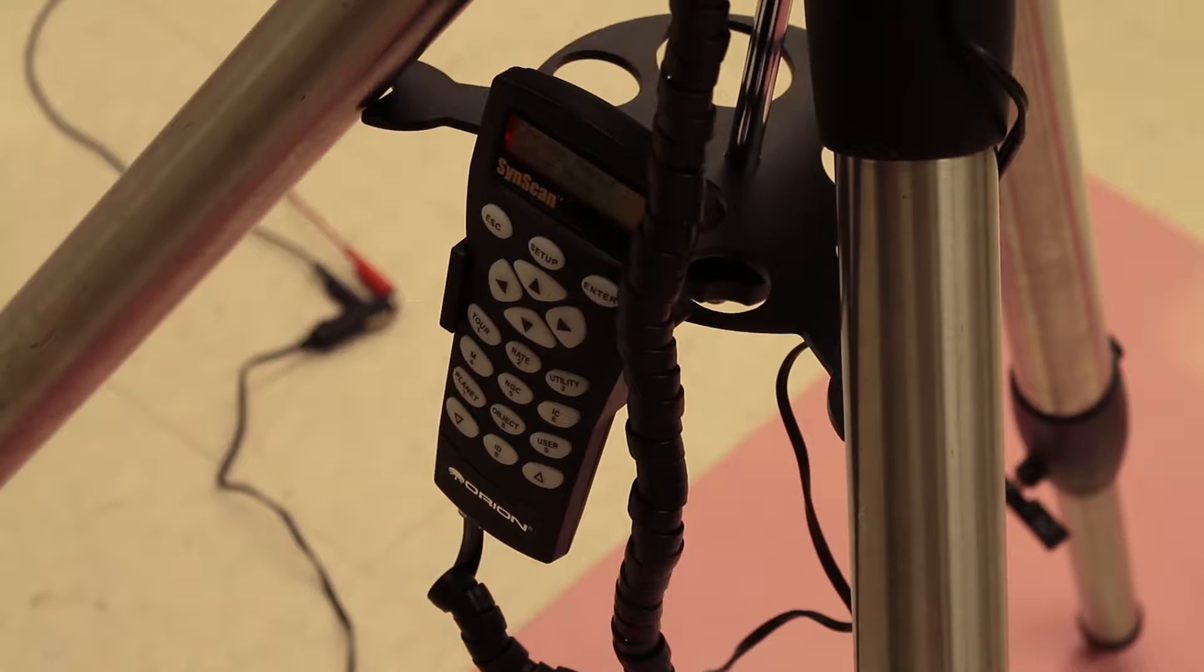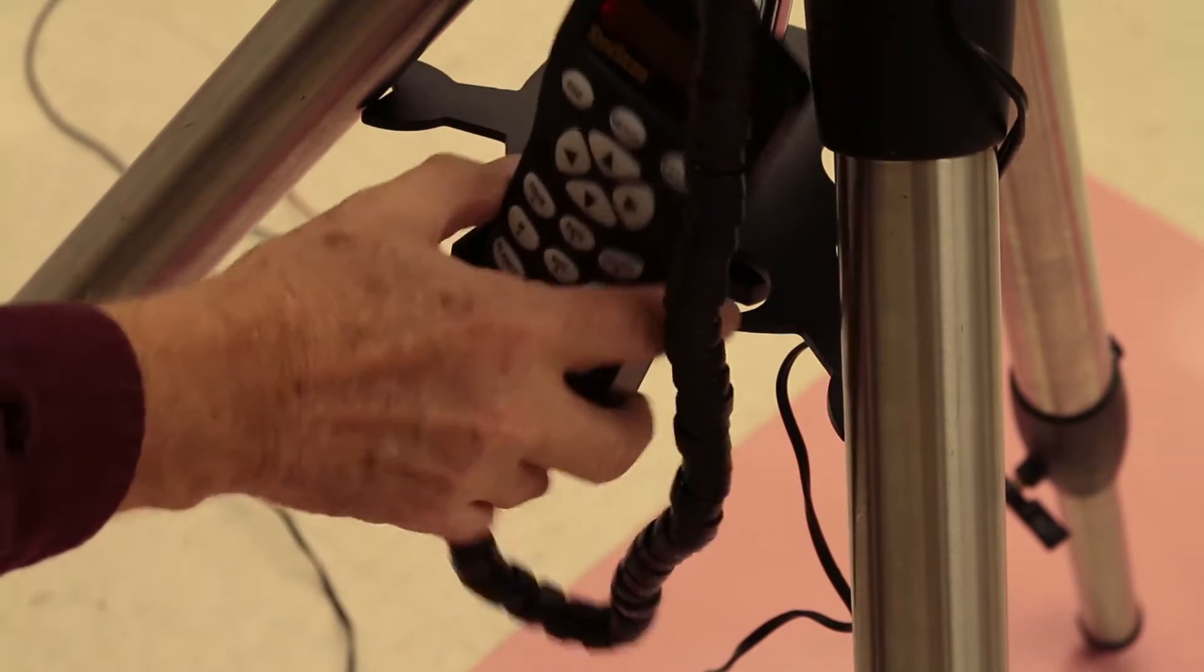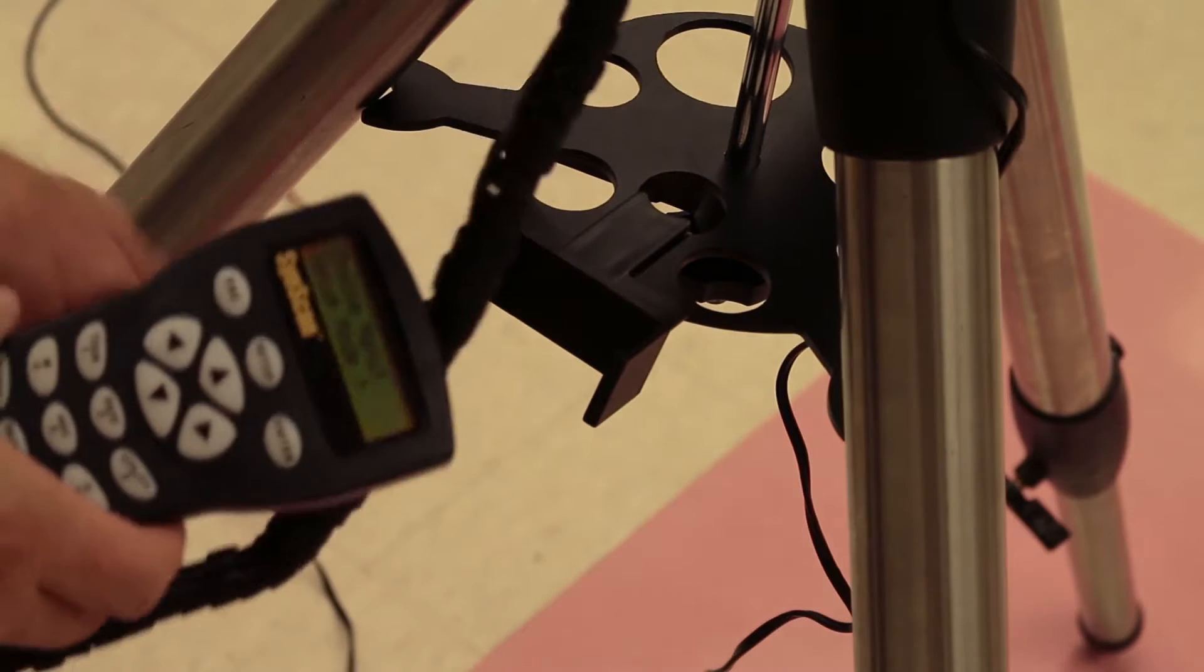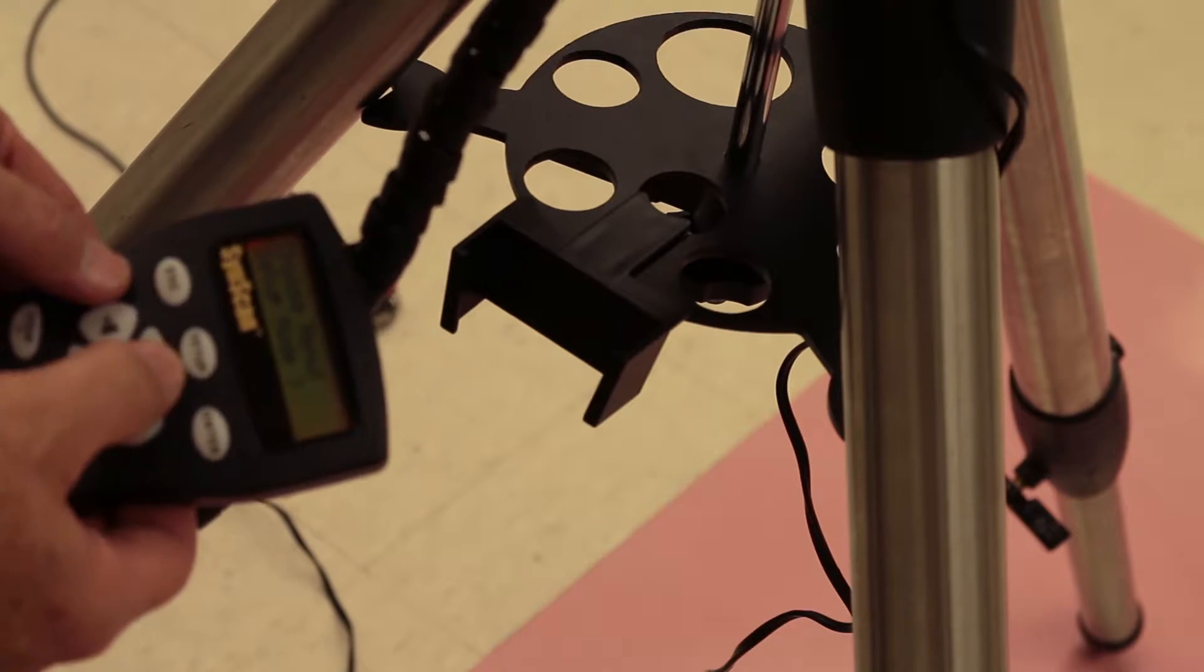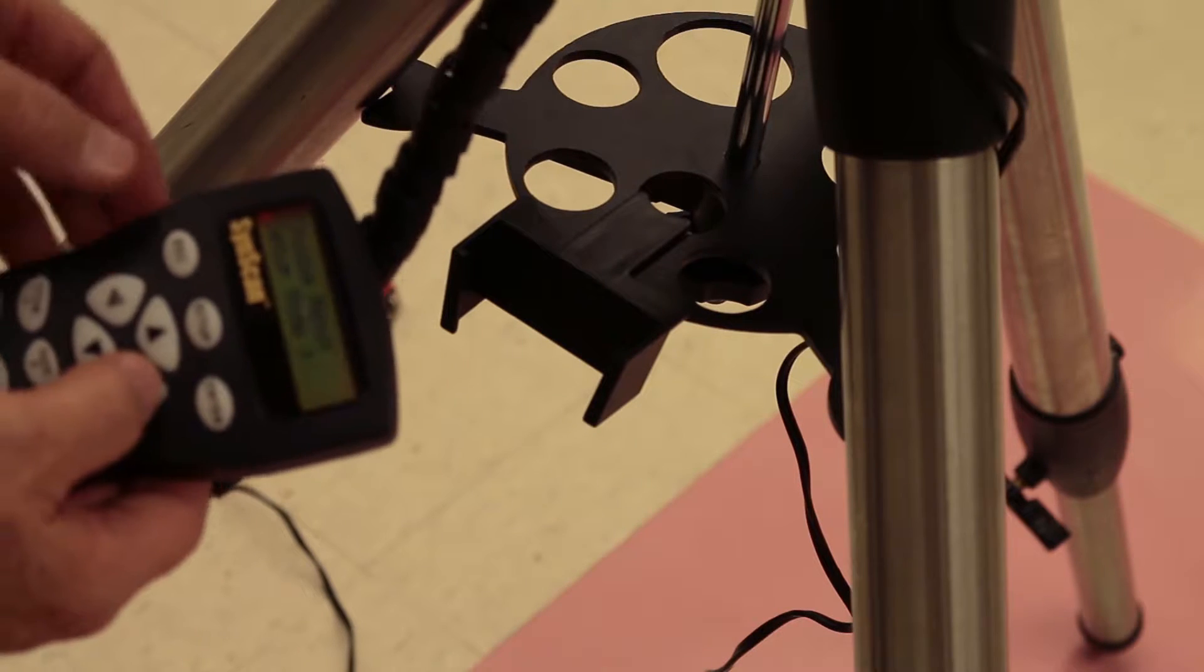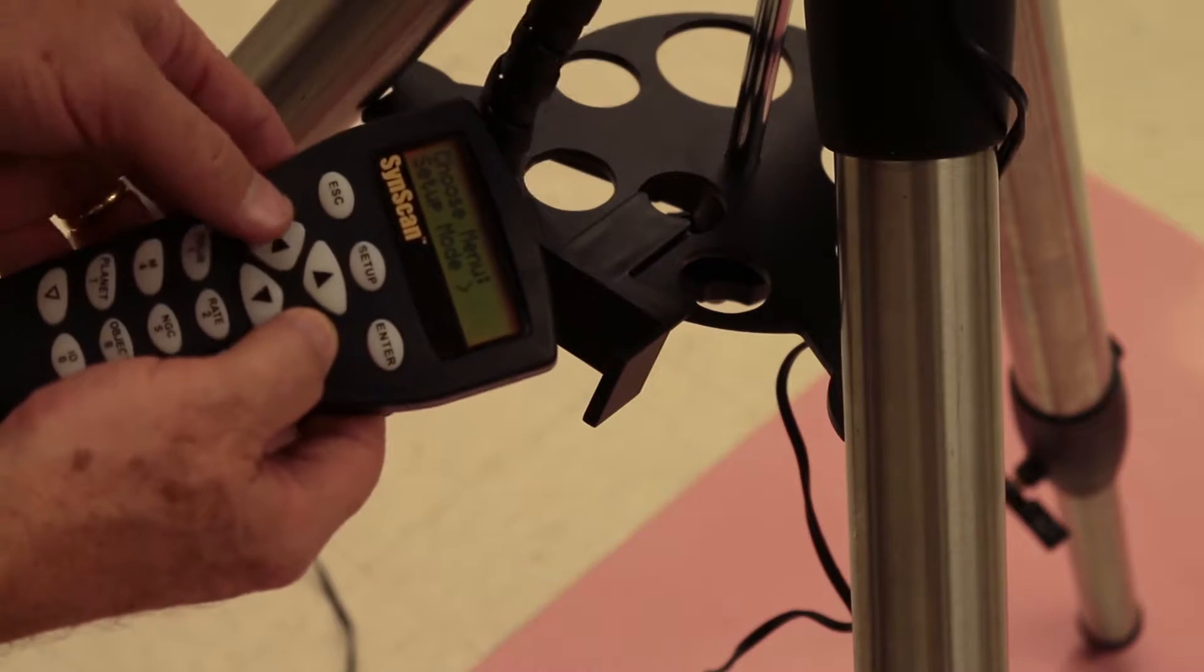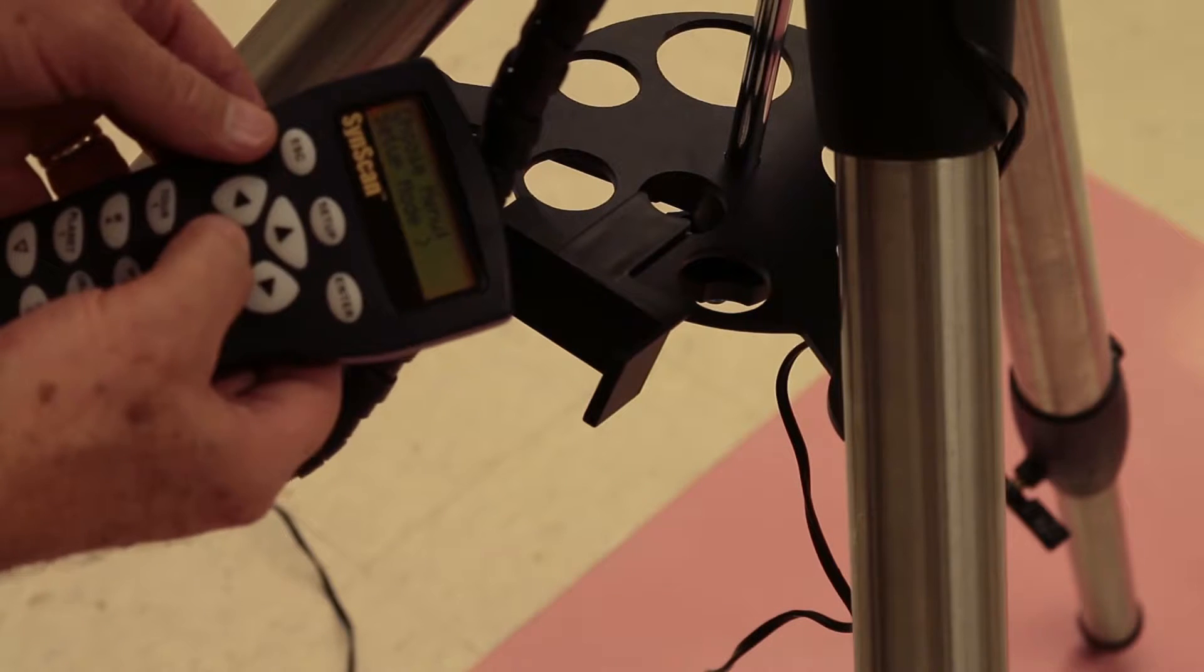And this is the actual hand controller here. Lots of buttons. Don't be intimidated. Basically, you can slew the telescope up or down, north or south. So if you're looking in the eyepiece and something's not exactly in the center, you can move the telescope slightly one way or the other that way.